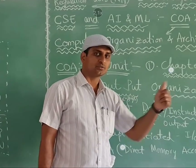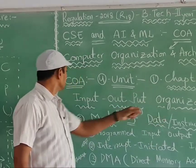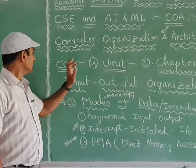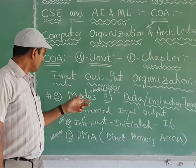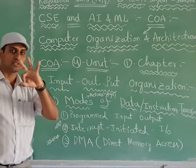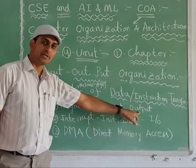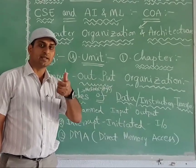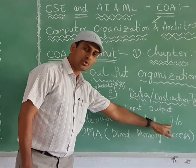This is a topic from input/output organization, fourth unit, first chapter in computer organization and architecture. We have methods of data transfer — three types. First one is programmed input/output, where the microprogram checks and controls data transfer. Second one is interrupt-initiated input/output — interrupt means disturbance.